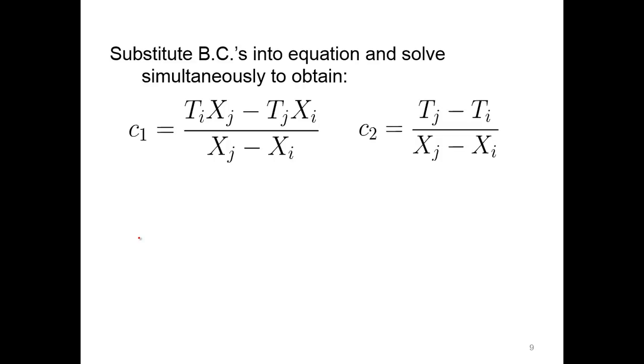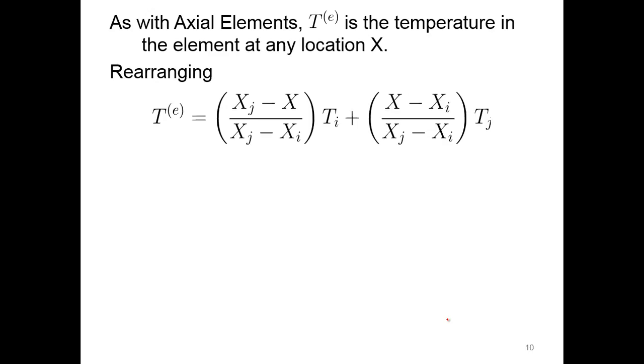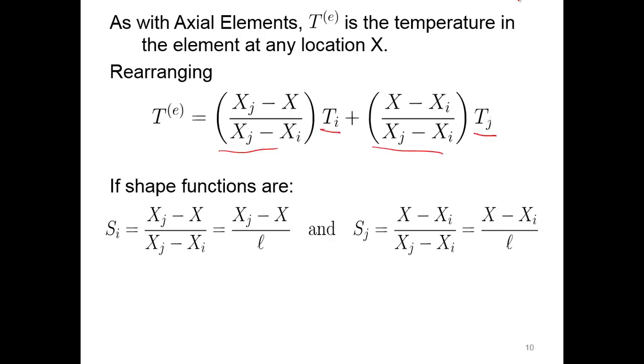We're going to substitute those boundary conditions in the equation to solve for c1 and c2, and we plug those back into our equation. We get our c1s here, and we get c2 here. Now we're going to rearrange so we get ti by itself and tj by itself. If we combine these terms, we get our shape functions. Noting that the denominator here, xj minus xi, is really just L, we'll substitute in for that to clean things up a bit.